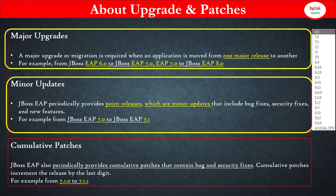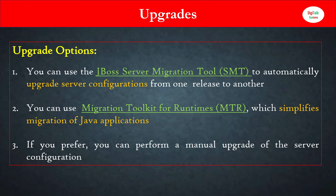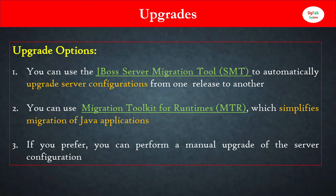So those are the three terms to understand properly: major upgrades, minor upgrades, and cumulative patches. Now let's look at the upgrade options — this is a very important topic covering the different tools we use for the JBoss upgrade.